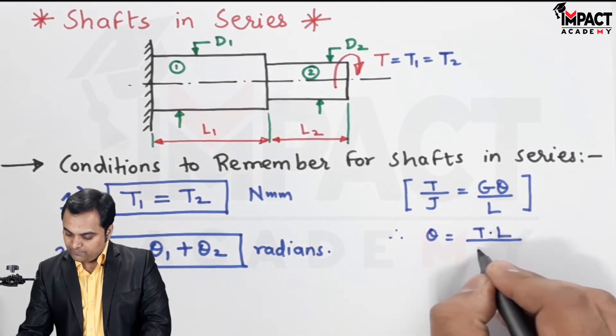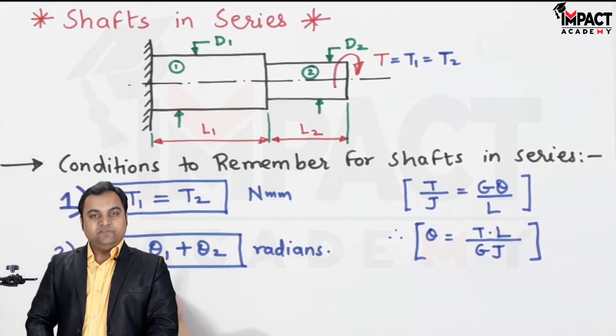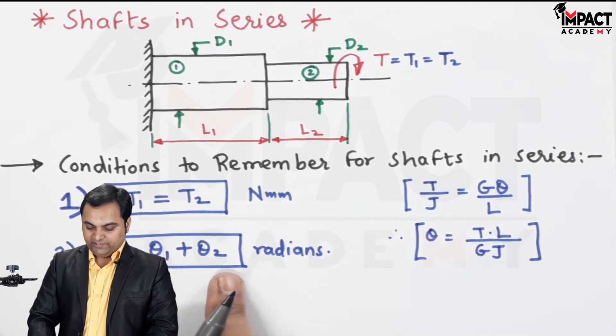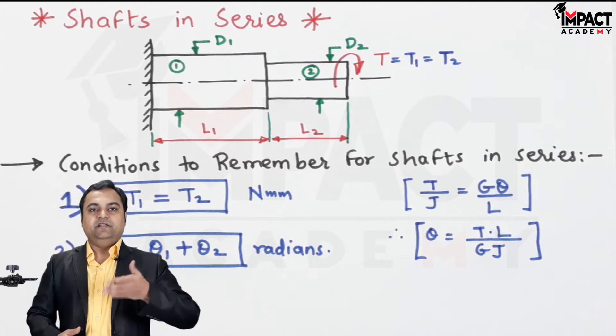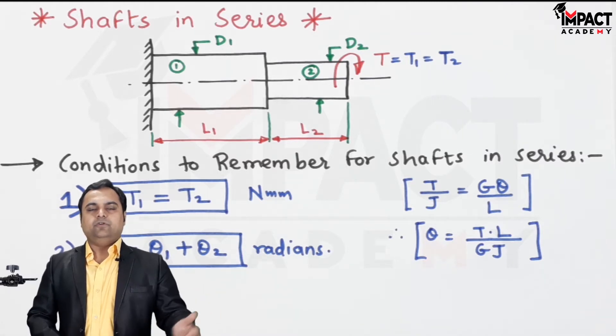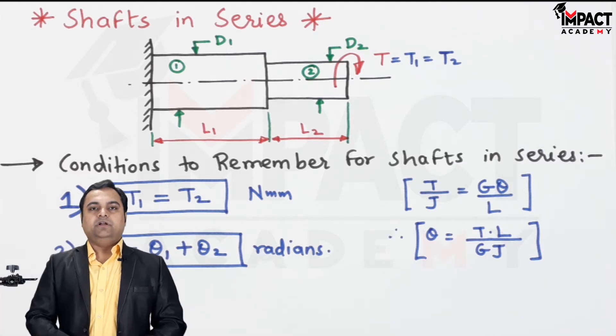So whenever we have shafts which are connected lengthwise in series, also called as stepped shaft, in that case the torque is equal for all the shafts and the angle of twist gets added. So this was regarding the shafts in series.